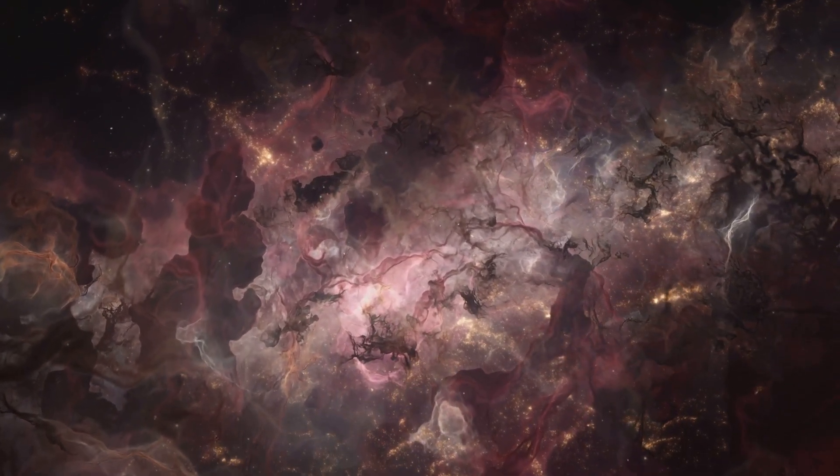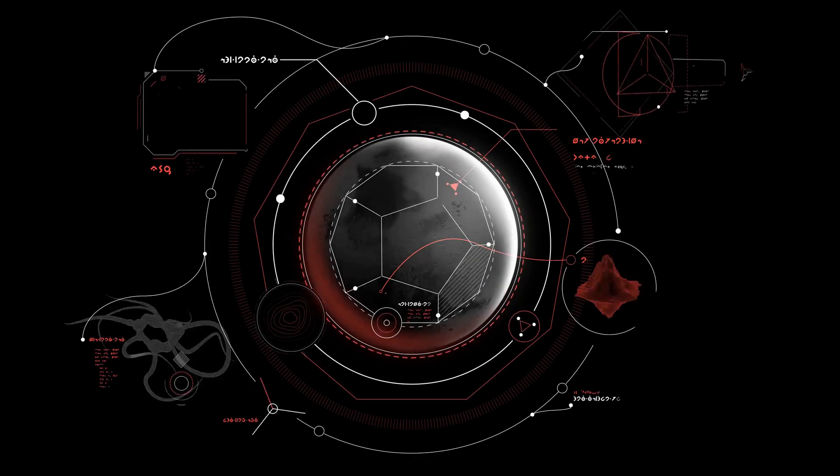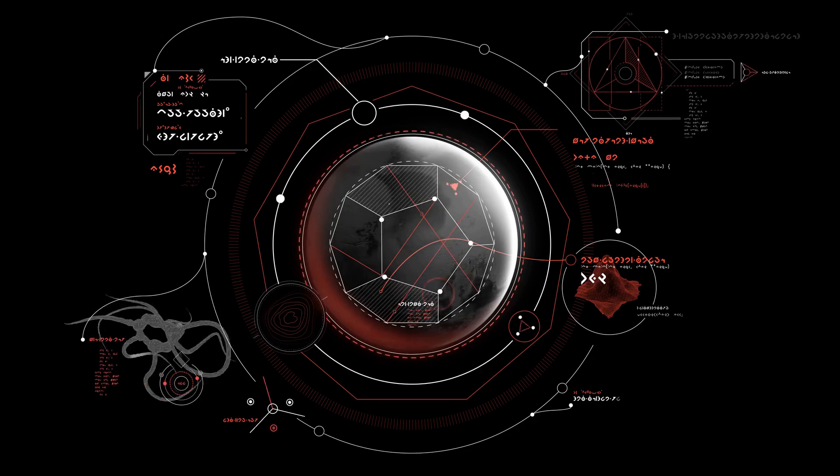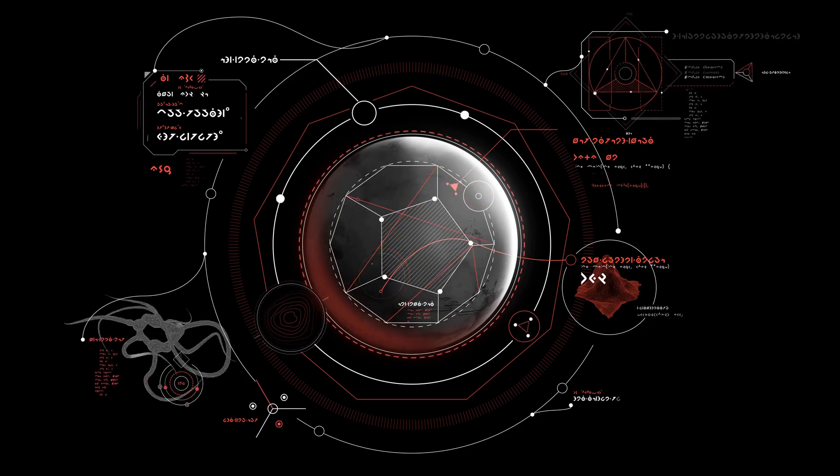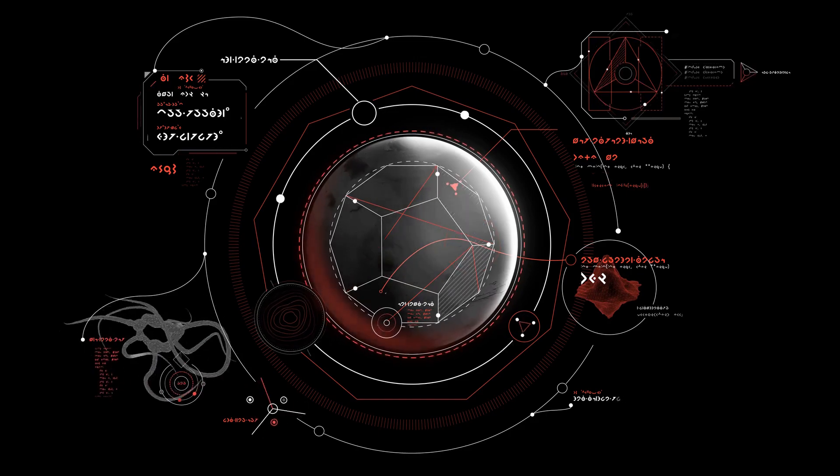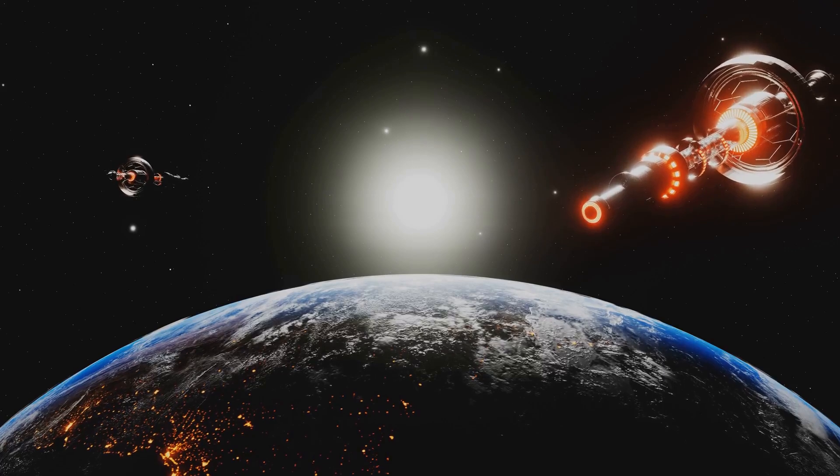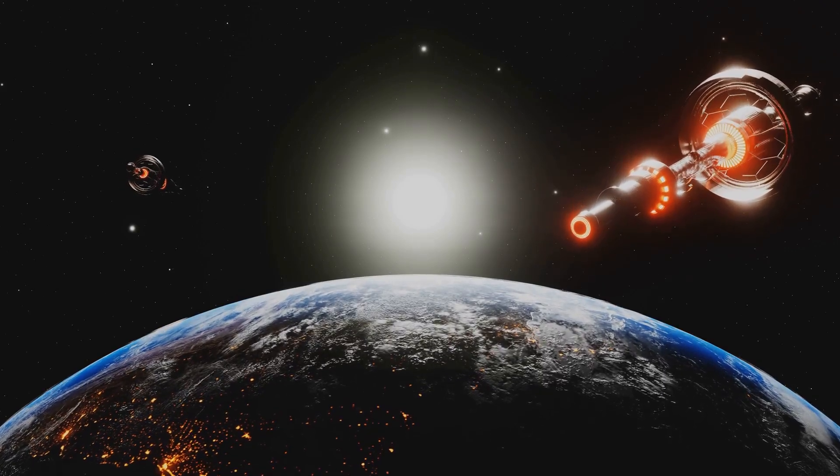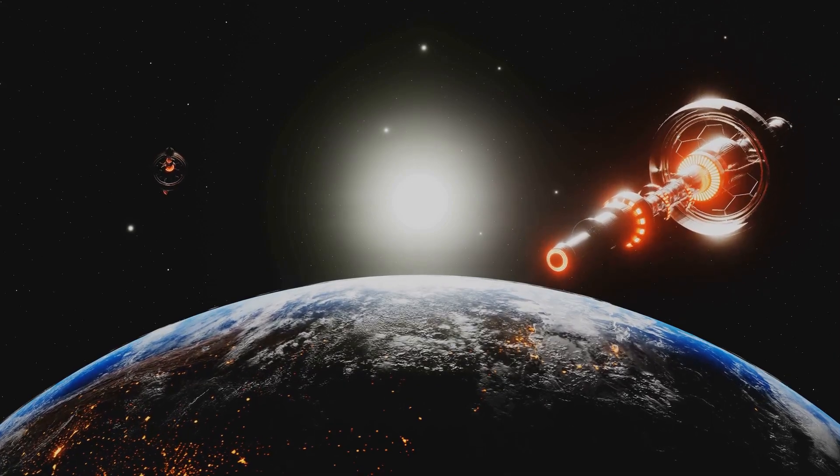NGC 5584 may have been discovered in the 18th century, but it remained largely a mystery. Its spiral structure, its composition, its distance from Earth—these were all educated guesses at best. For centuries, NGC 5584 remained a distant, silent enigma, until the dawn of the 21st century brought about a revolutionary revelation.